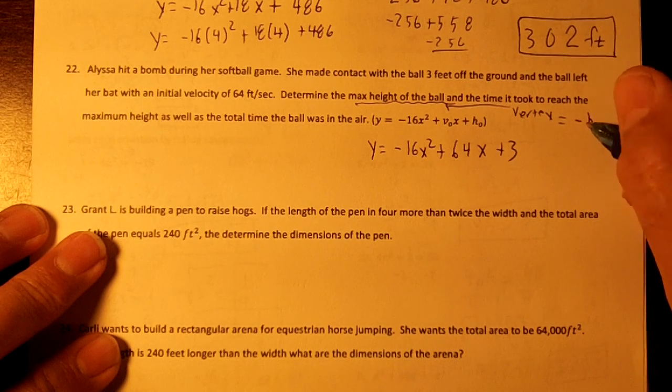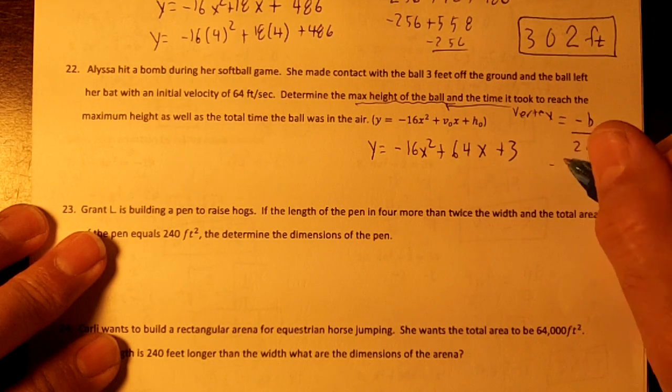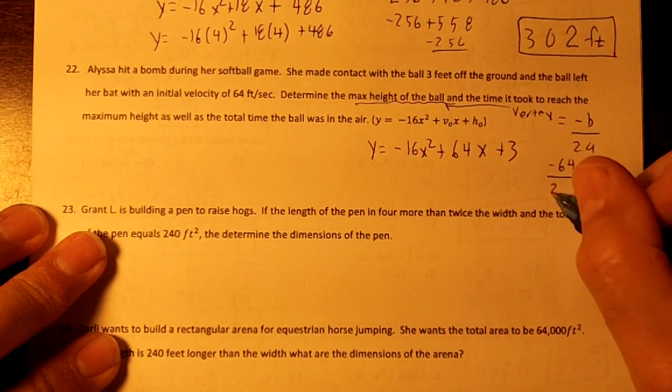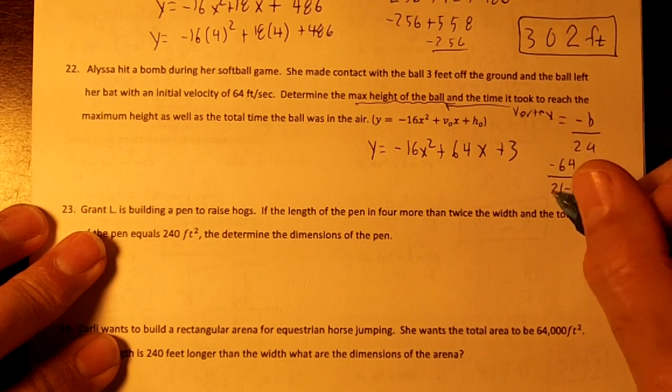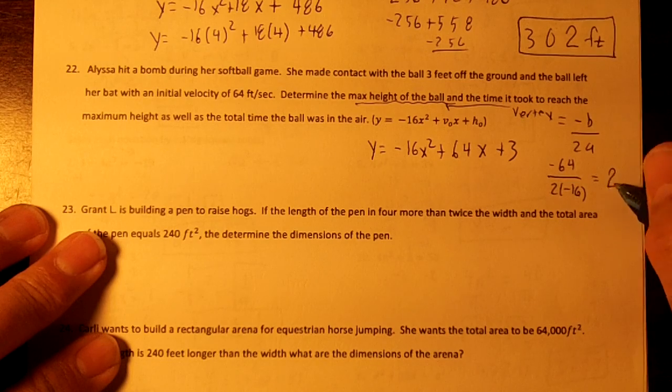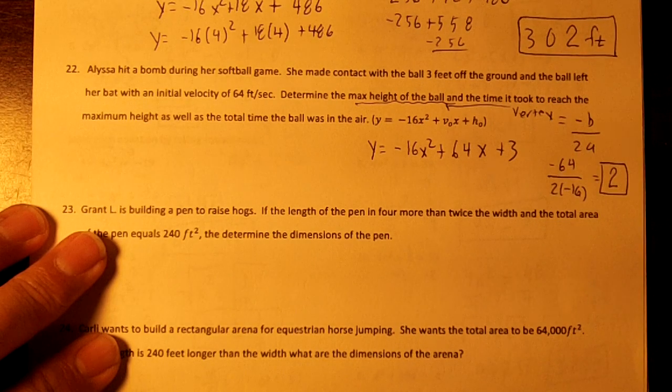The vertex x-coordinate is negative b over 2a. So b is 64 over 2 times negative 16. That's going to be 64 divided by 32, which will be 2. So at 2 seconds, the ball is at the highest point.